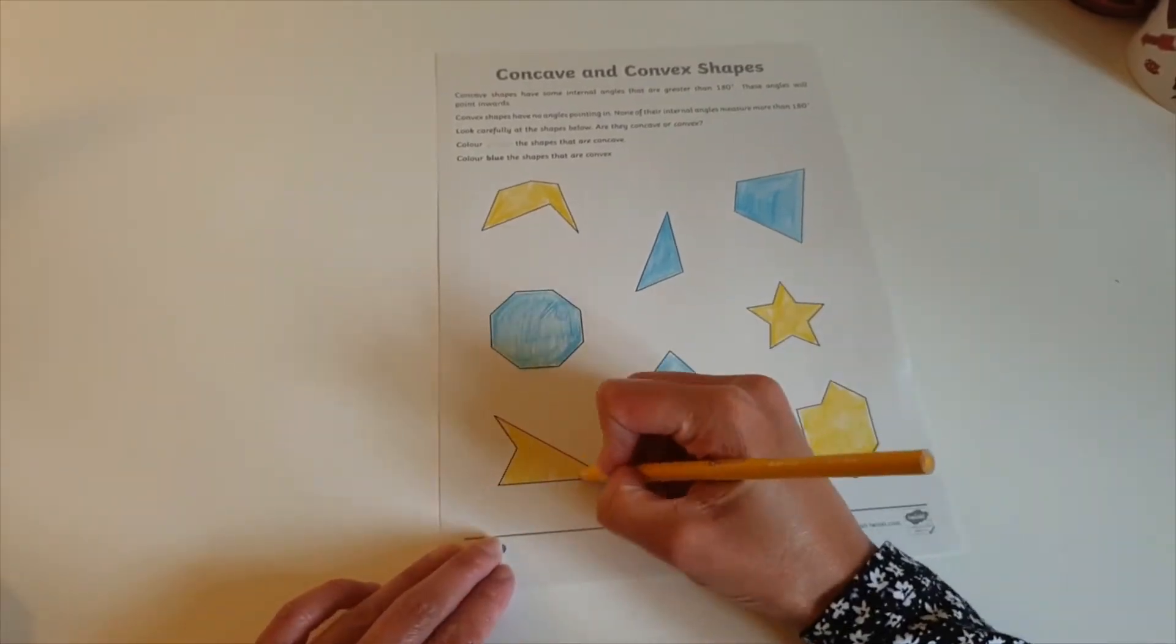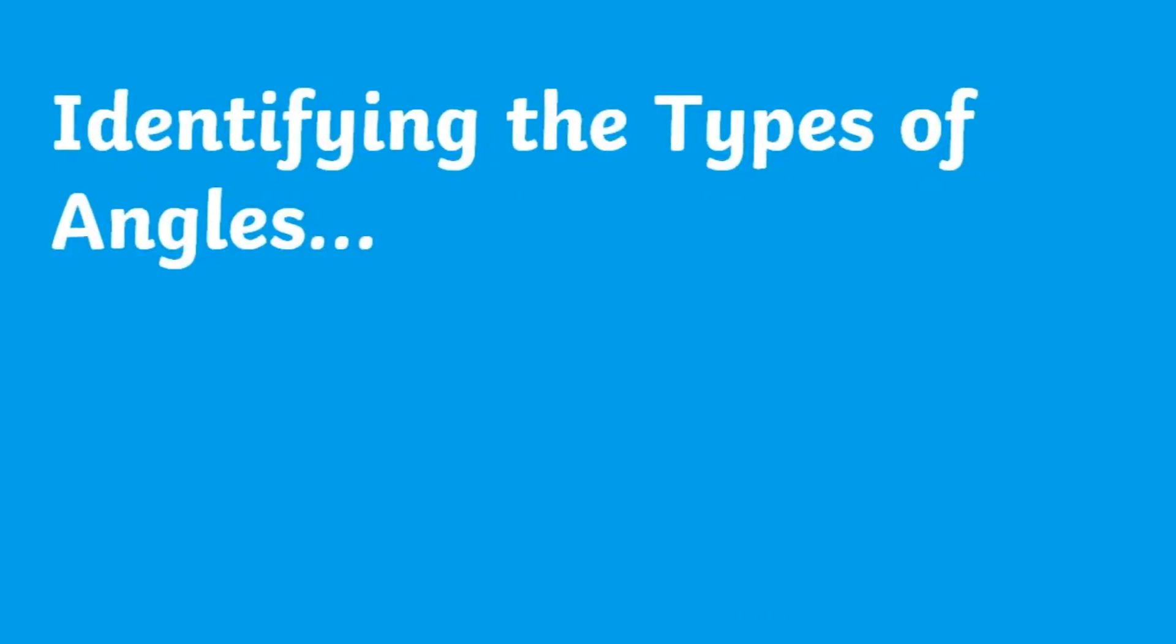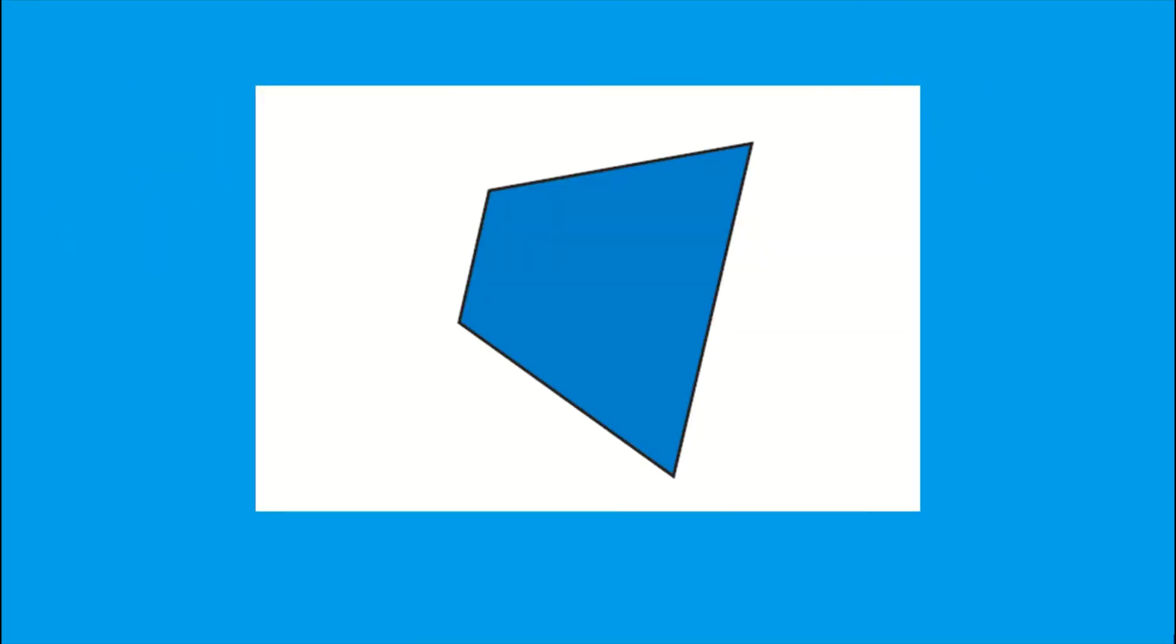If you want to take your child's learning one step further, you could get your child to identify the types of angles within the shape such as acute, right, or obtuse.